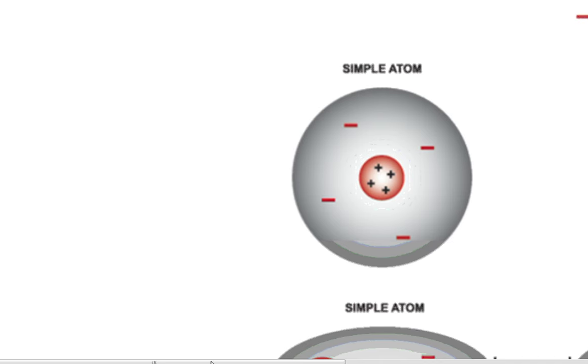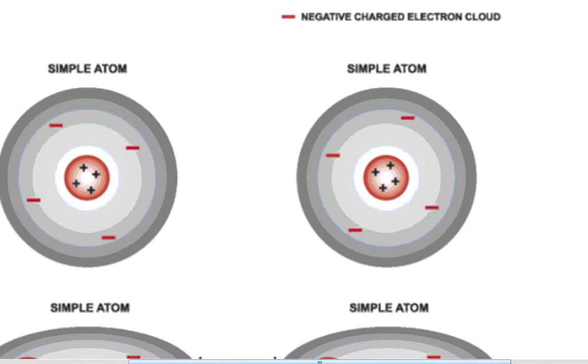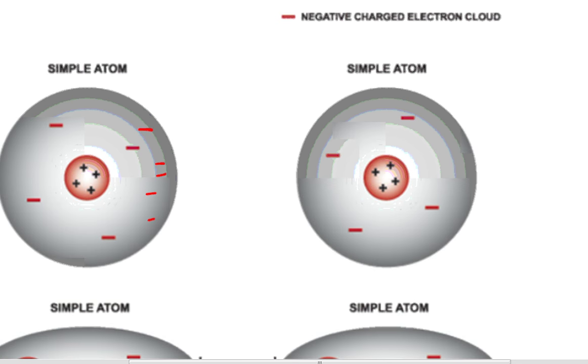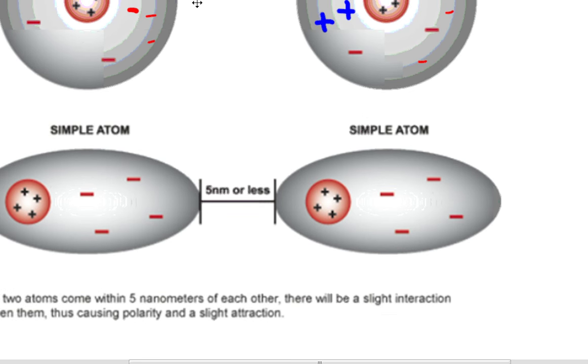When they get close to one another, all the negatives... negatives don't like negatives. If the negatives are here and the negatives are here, what's going to happen? On one of them, they're actually going to shift to the other side. The positives are going to go to that side, and there's going to be a slight attraction, very slight.